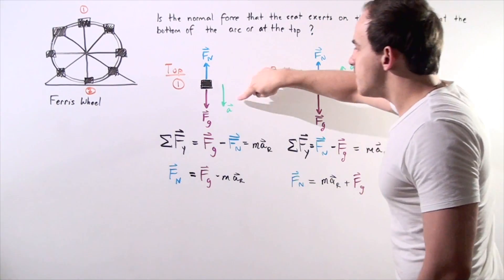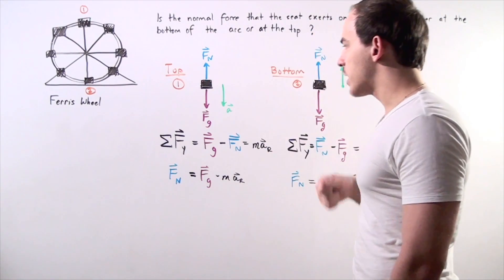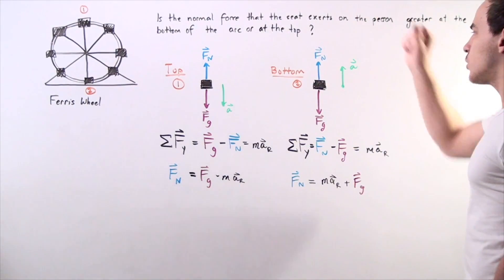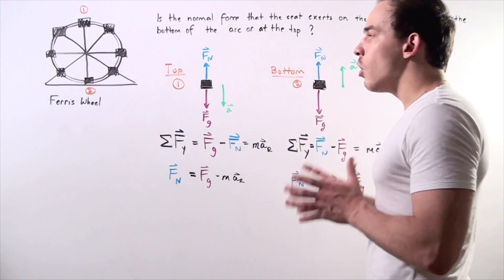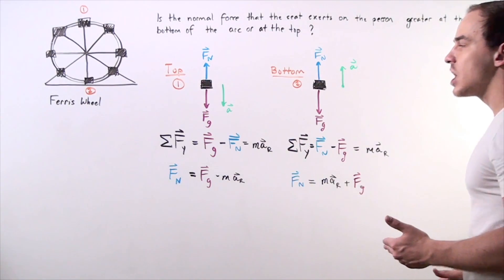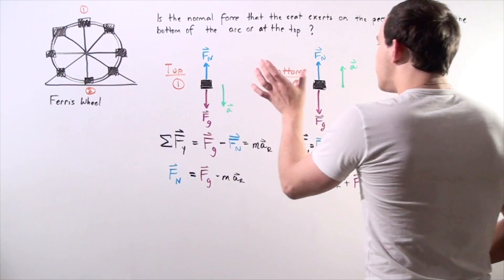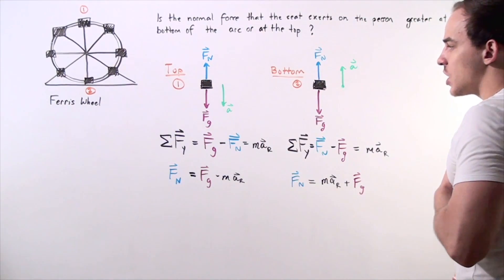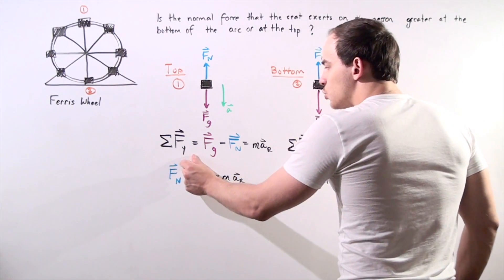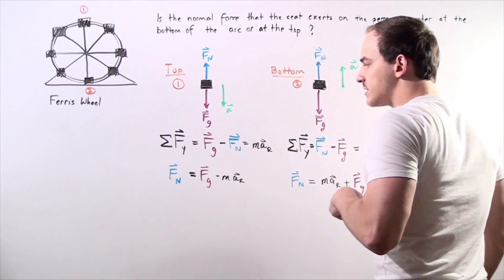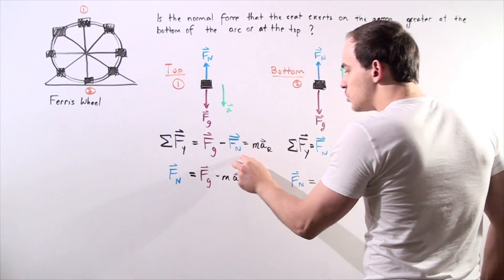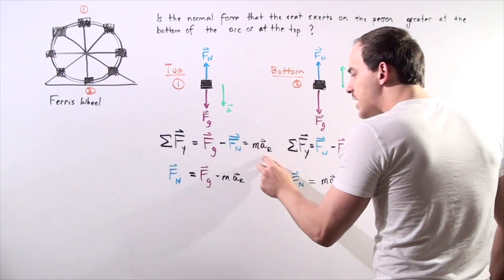Let's choose at the top position the downward direction to be positive, and at the bottom position the upward direction to be positive. Summing all the forces acting along the y-axis for the top position: choosing downward as positive, the force of gravity minus the normal force equals mass times radial acceleration.